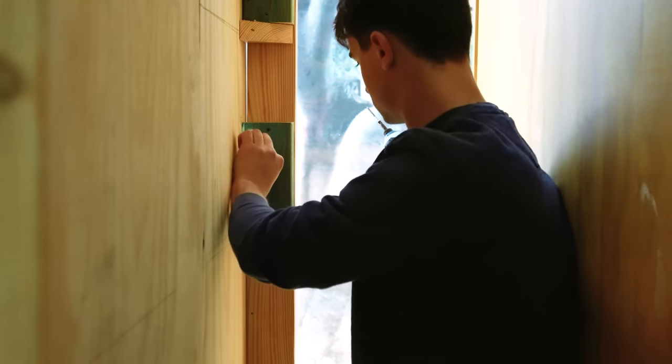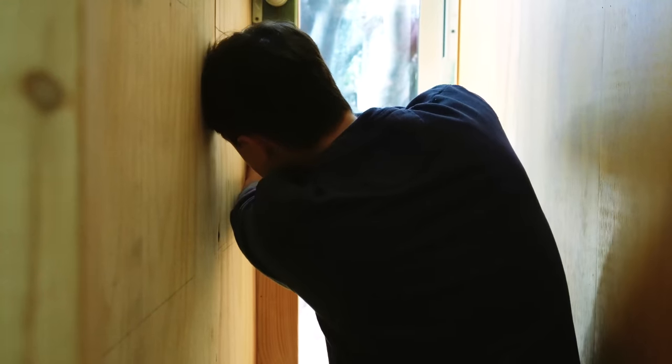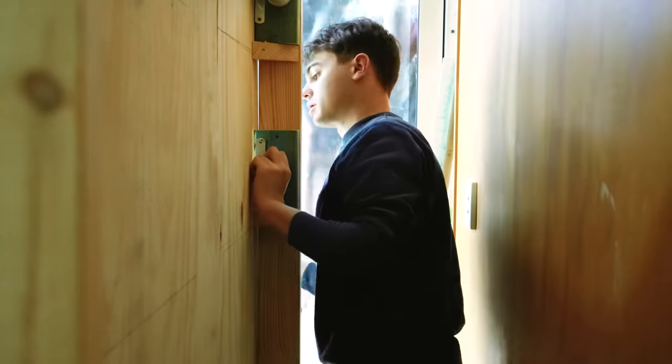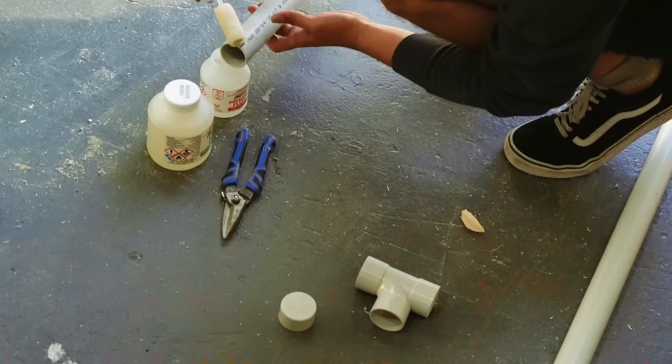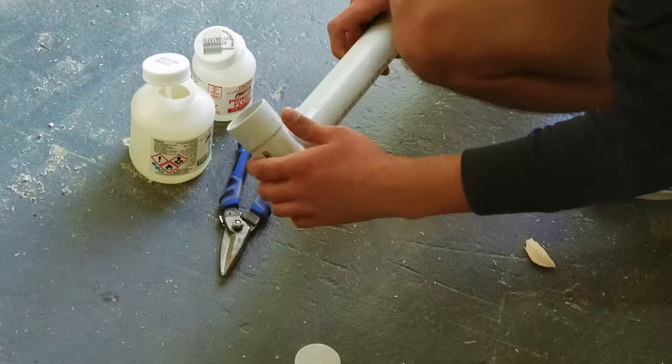I then screwed in some of these brackets to hold the PVC pipe that I found at the hardware store to hold it the right distance away from the plywood wall to create the drainage system. Then it was time to start gluing all the bits and bobs together to try and get this drainage system to work.